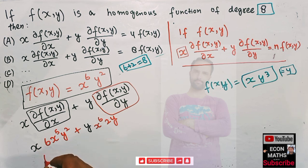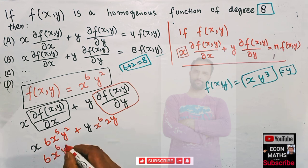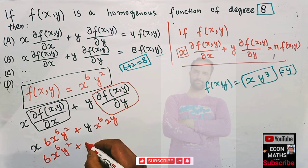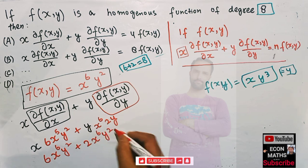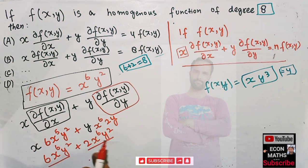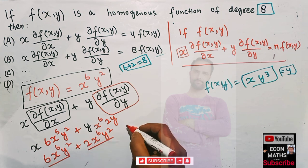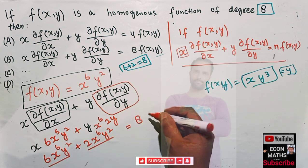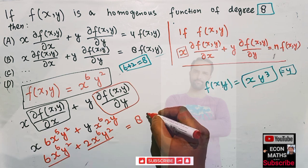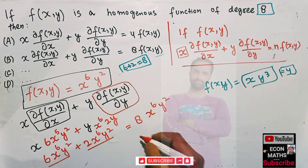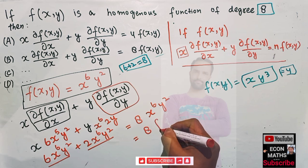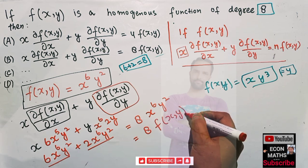So we have x into 6x⁵y², which gives 6x⁶y², plus y into x⁶ times 2y, which gives 2x⁶y². We have the same terms, so this comes out to be 6 plus 2, which equals 8 times x⁶y², which is 8 times f(x,y). So the correct option is the one that states the expression equals 8 times f(x,y).